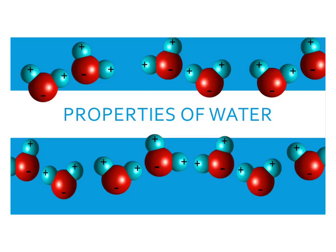In this lesson, I'm going to be going over the properties of water. In class, we talked about how water is a polar molecule. It forms polar covalent bonds between the oxygen and the hydrogen atoms. Now we're going to talk more specifically about the properties of water.